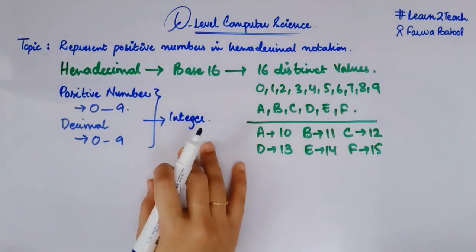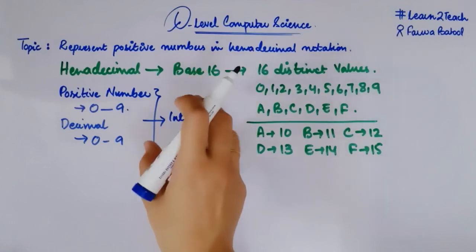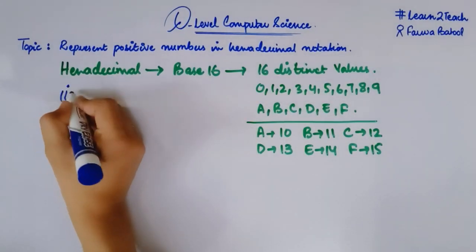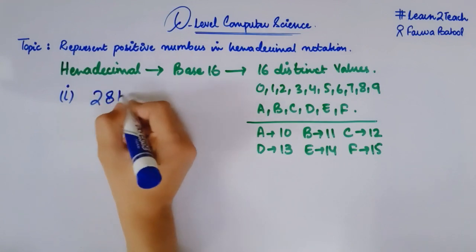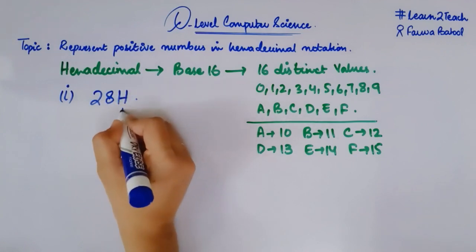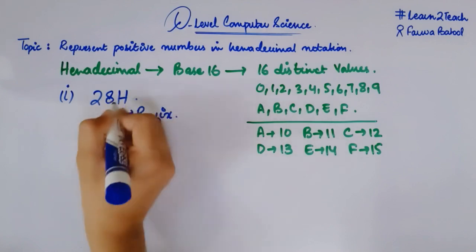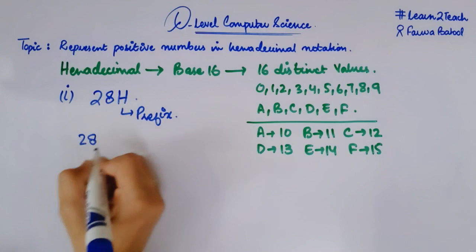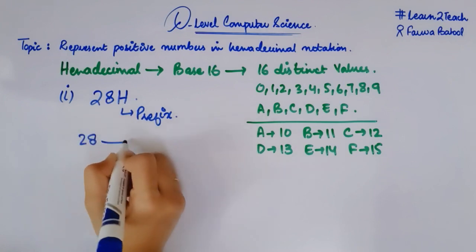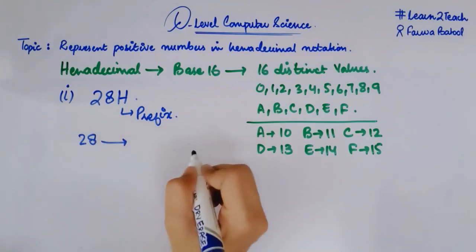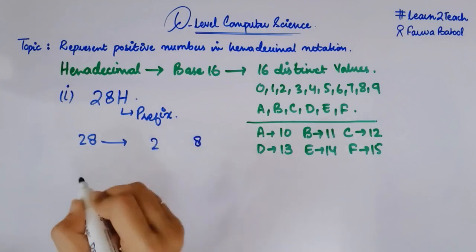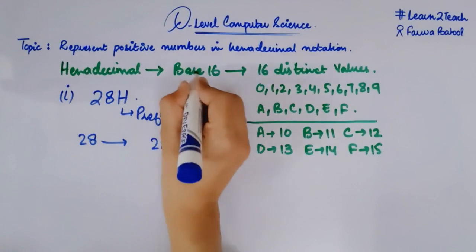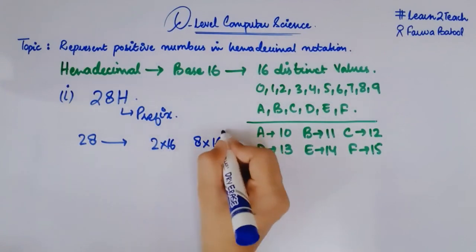Let me take an example of a hexadecimal number and show how it represents an integer value. My first example is 28H. The H is a prefix that indicates it is a hexadecimal number, so my number is 28 in hexadecimal form. To find its integer or decimal value I need to convert it. I write the digits 2 and 8, then multiply each digit by the powers of 16 in ascending order, starting from 16 to the power 0 on the right, then 16 to the power 1 moving left, and so on.